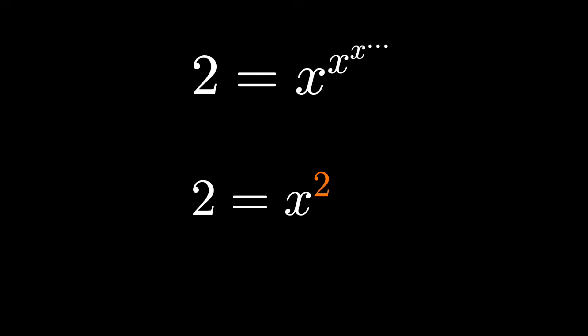And this equation reduces to 2 equals x squared, which is a relatively easy equation to solve. Just take the square root of both sides, don't forget your plus and minus.